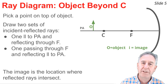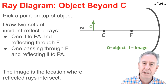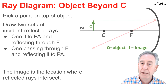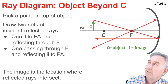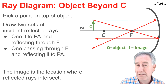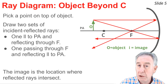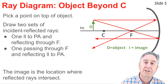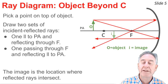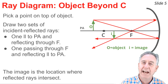Begin by picking a point on the top of the object, then from that point draw two sets of incident and reflected rays. The first incident ray goes parallel to the principal axis and reflects to the focal point. The second incident ray goes to the focal point on the way to the mirror and reflects parallel to the principal axis. Where these two reflected rays intersect is the location of the image. If the object is positioned on top of the principal axis, the image is positioned below the principal axis, drawn from the principal axis down to the intersection point and labeled I for image.